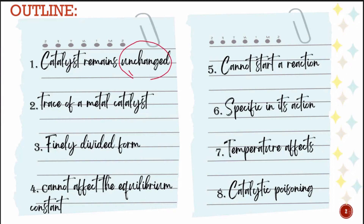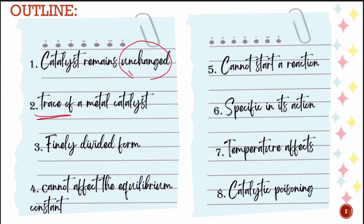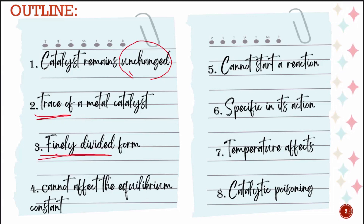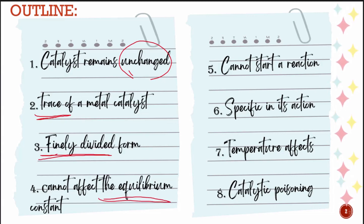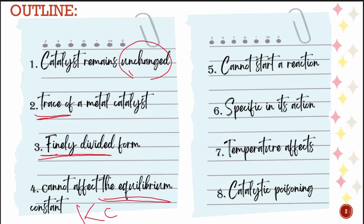A catalyst doesn't change the equilibrium constant. We just have a trace of a metal catalyst in finely divided, powder form. If I am at equilibrium, this is the equilibrium constant — it doesn't affect it.